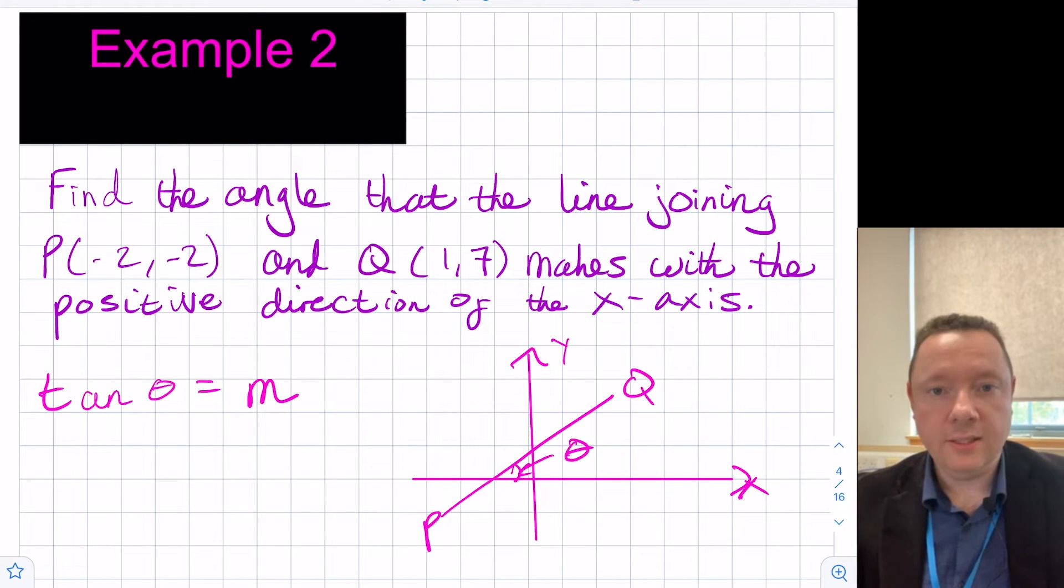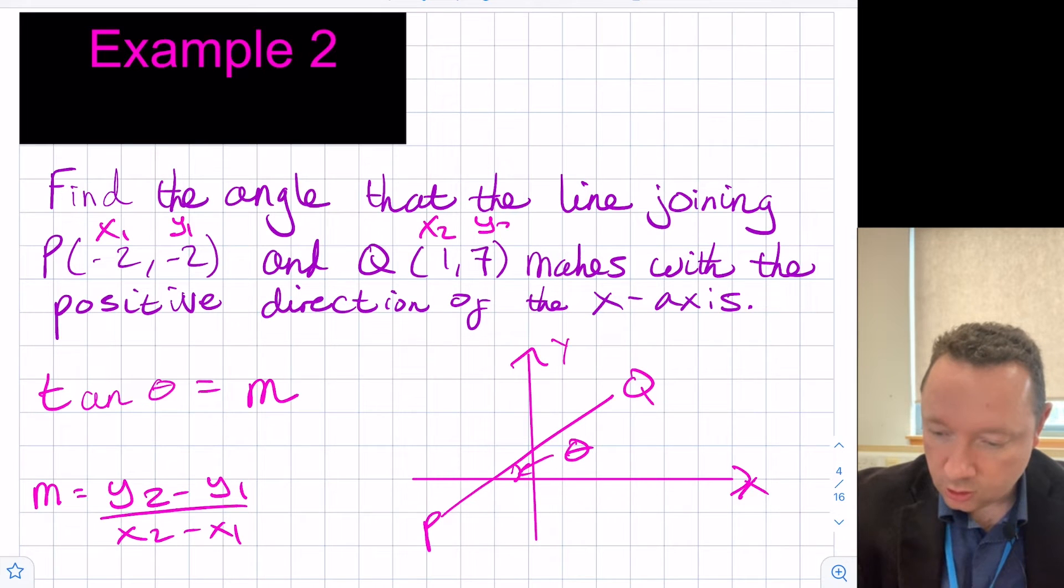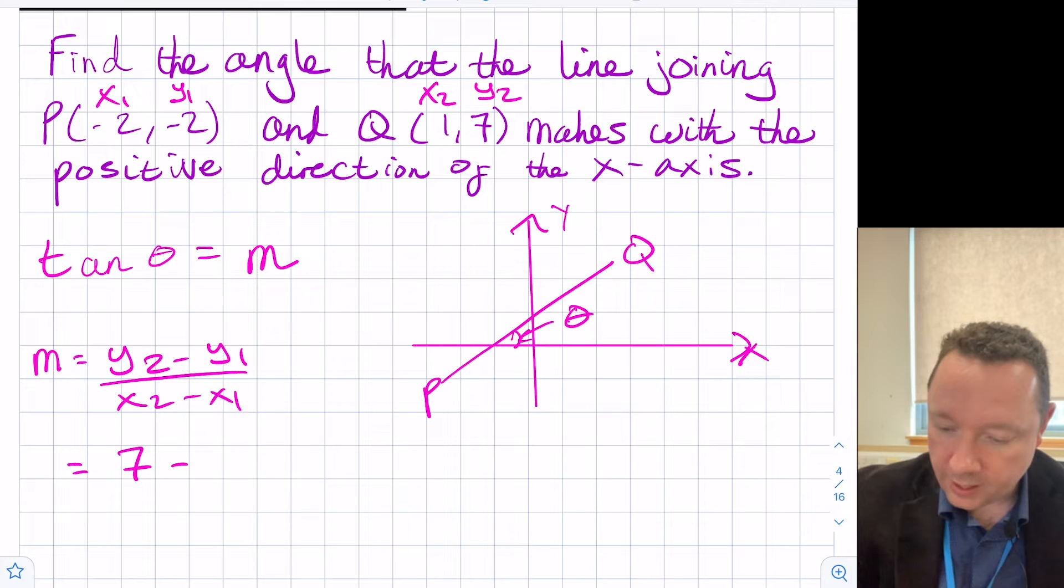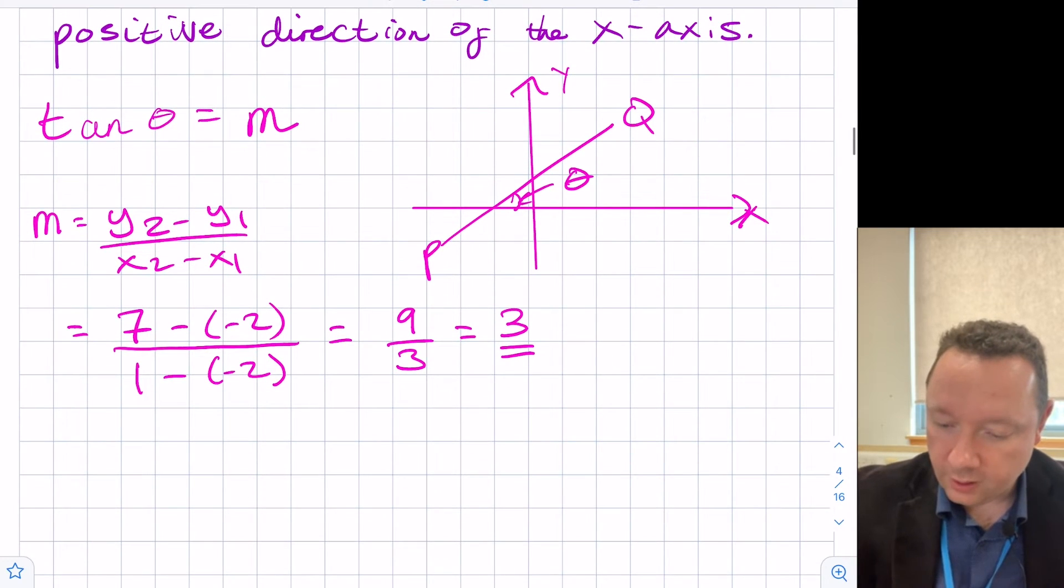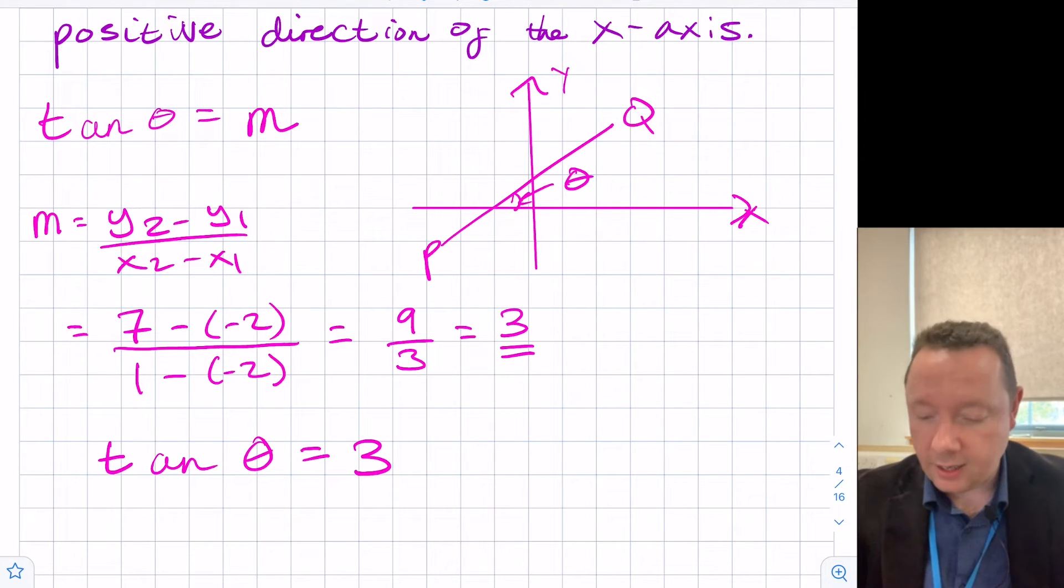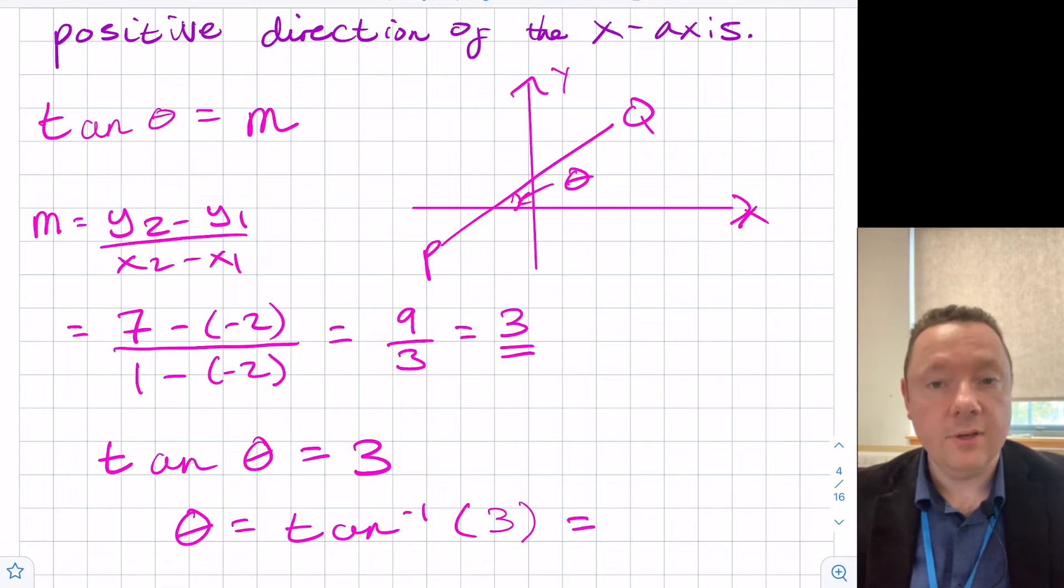From our definition of gradient, (y₂ - y₁)/(x₂ - x₁). If we call that x₁ and y₁, this one would be x₂ and y₂. Watching our negatives here, that gives us 7 - (-2) on the top and 1 - (-2) on the bottom. That's 9 over 3, which is just 3 in total. So we now know that tan of our angle is equal to the number 3. So we can use a calculator to do the inverse tan. So theta is the inverse tan of 3, which in degrees is 71.6 degrees to three significant figures.